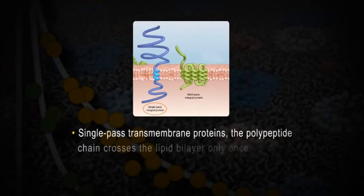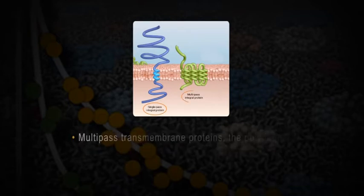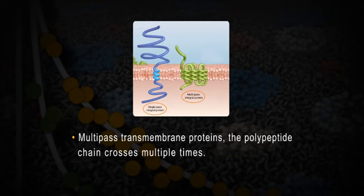In single-pass transmembrane proteins, the polypeptide chain crosses the lipid bilayer only once, whereas in multi-pass transmembrane proteins, the polypeptide chain crosses multiple times. Integral proteins containing membrane-spanning alpha helical domains are embedded in membranes by hydrophobic interactions with the lipid interior of the bilayer and probably also by ionic interactions with the polar head groups of the phospholipids.